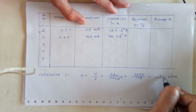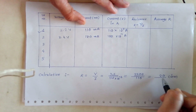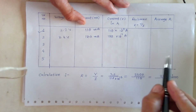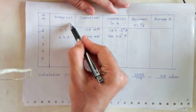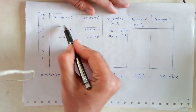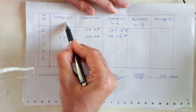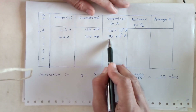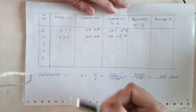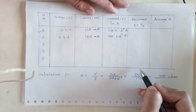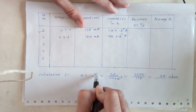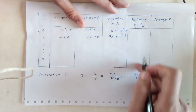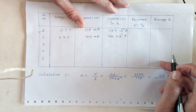Students, you will take the other readings by increasing the voltage, note down the corresponding current, calculate the resistance for each result, and then find the average resistance.